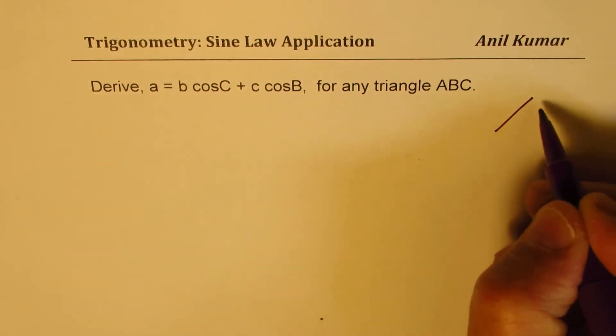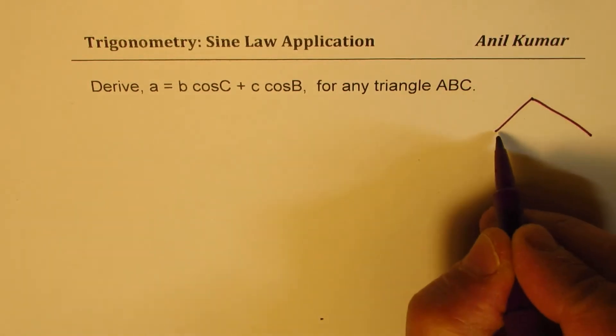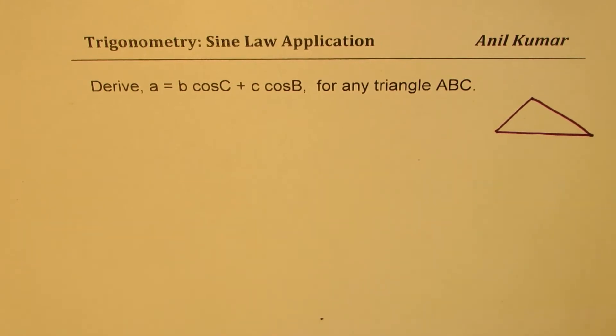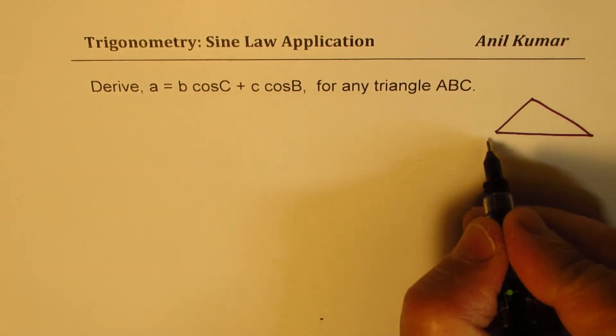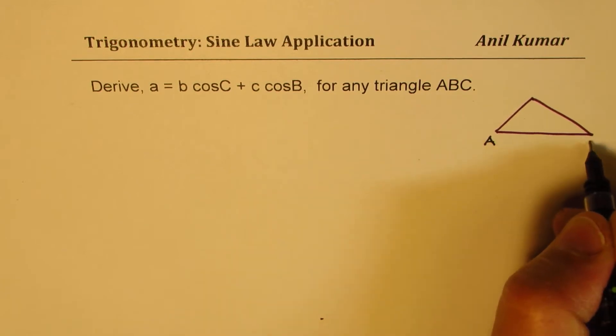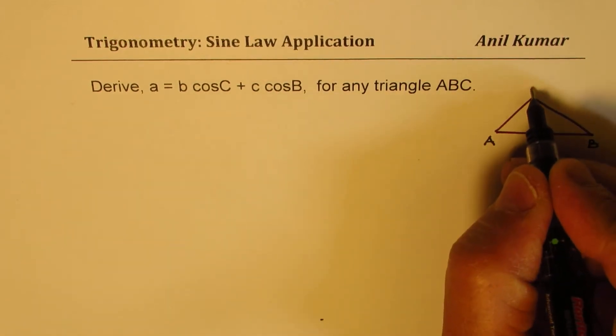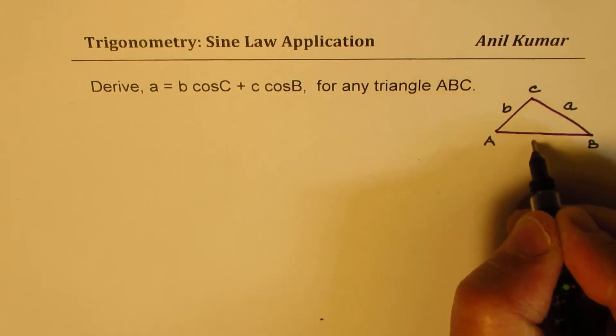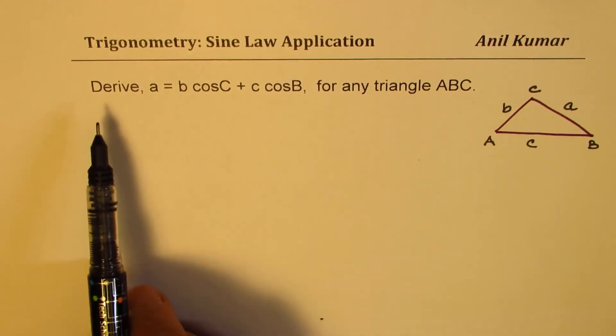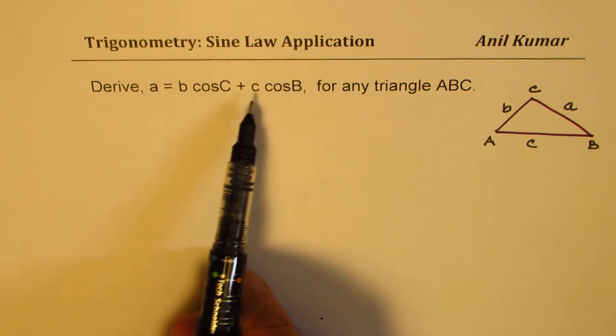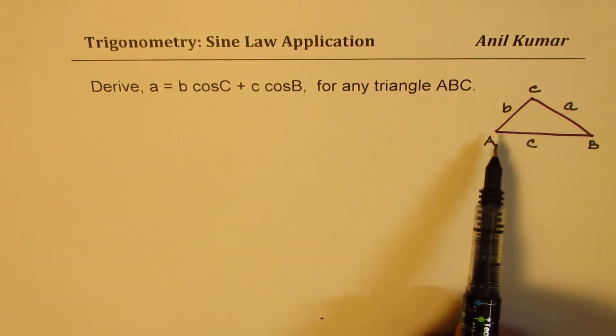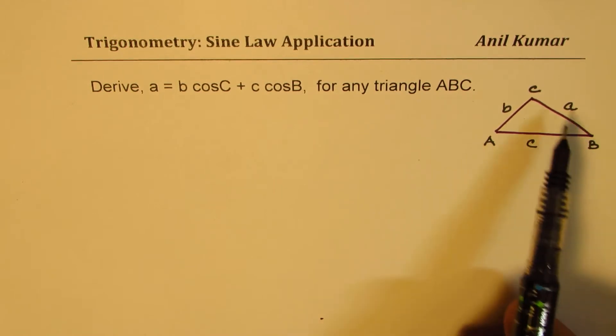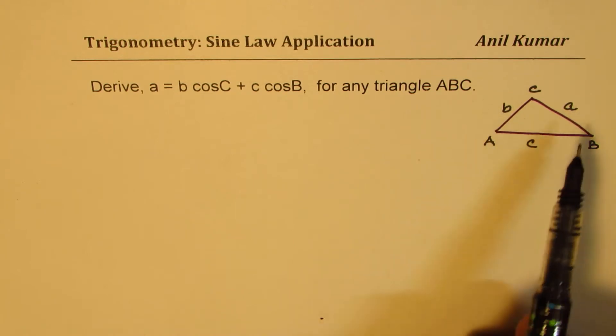So let's make a triangle here, any triangle ABC. The sides for vertices ABC will be written as lowercase ABC. That is standard. So when we say A equals to B cos C plus C cos B, that means we're talking about a triangle ABC with vertices capital A, capital B and capital C and sides opposite to them as lowercase a, b and c.